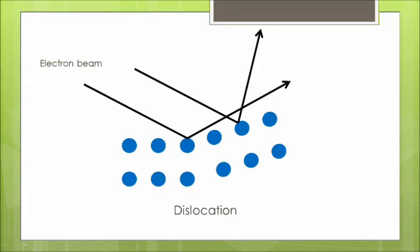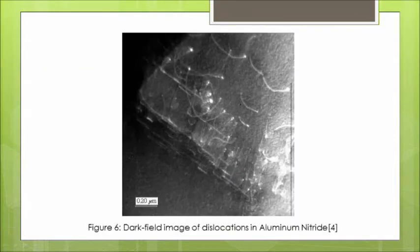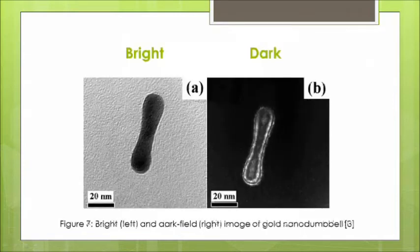Using this property, one can detect dislocations, which are line defects in the crystal. Together, bright and dark fields can provide information on the size and morphology of the particles, and can detect crystalline areas, defects, and grain boundaries.